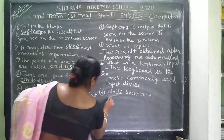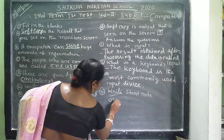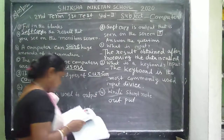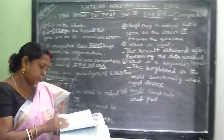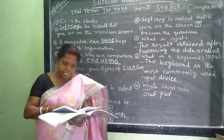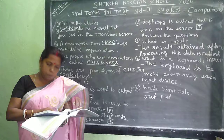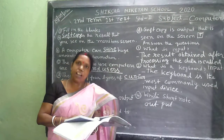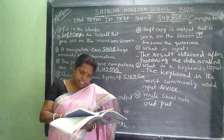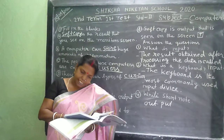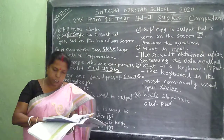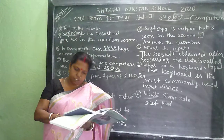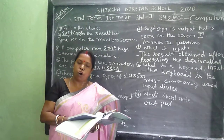Output: the result obtained after processing the data is called output. It is converted into useful information. This information is called the output of the computer.